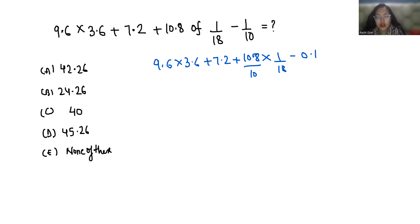So if I cut this with table of 2, 9 and here 5, 54 and in table of 9, 54 come at 6. So 9.6 times 3.6 plus 7.2 plus 6 by 10 minus 0.1.